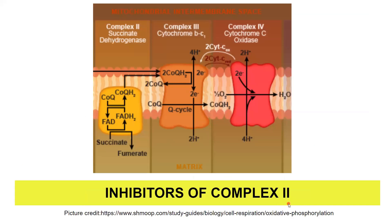Moving on to complex two — in the matrix, the Krebs cycle includes the conversion of succinate to fumarate, during which FAD is converted to FADH2. The electrons from FADH2 need to be passed on to complex three via complex two, also called the succinate dehydrogenase complex. This complex converts succinate to fumarate, produces FADH2, and the electrons are further transferred to coenzyme Q.